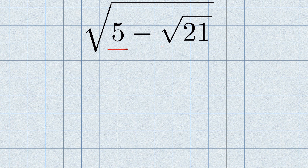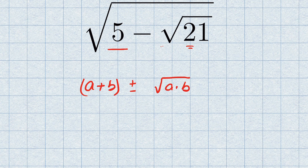To simplify such questions, we write the number in terms of a plus b, then plus or minus a square root term. We can write it as √(a×b) times 2, and then convert it into (a ± b)² form so we can remove the square root with the square.